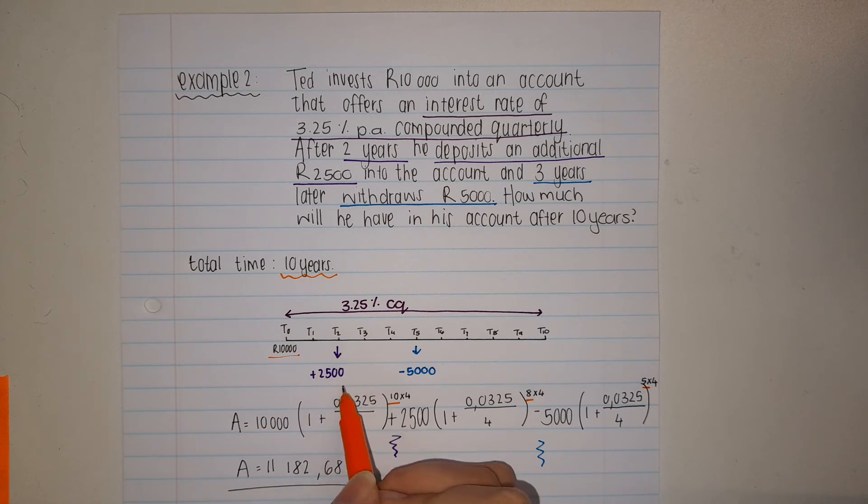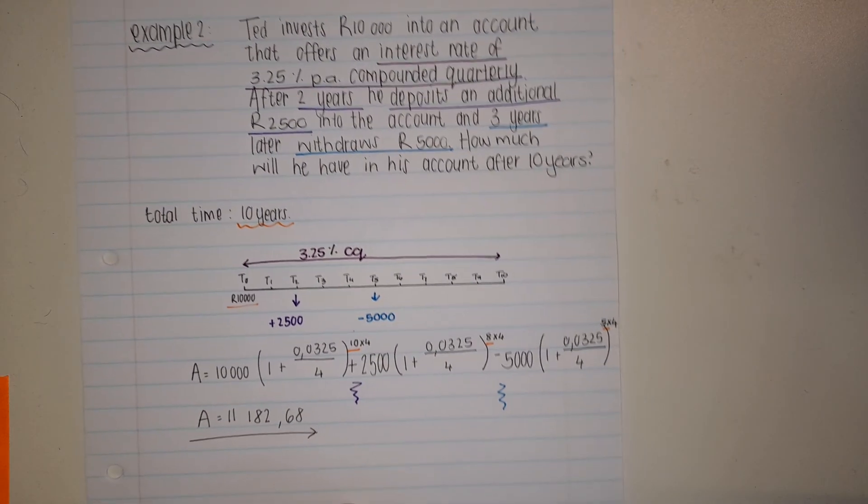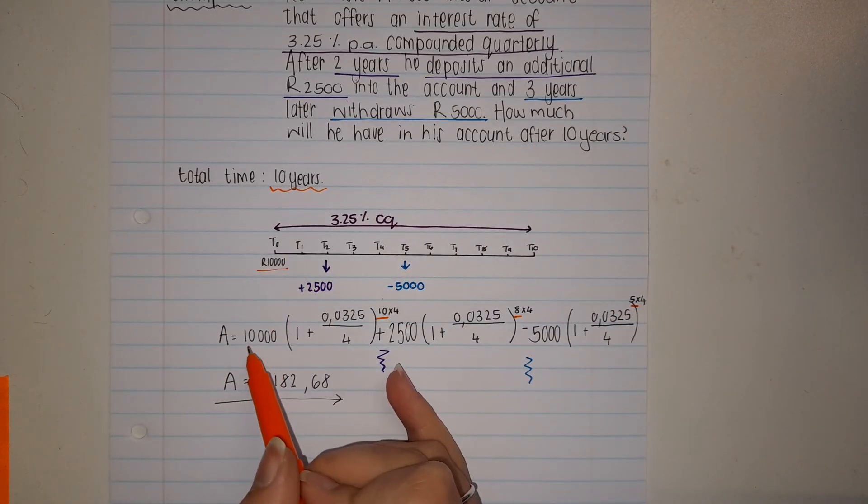After 2 years he added 2500, and then 3 years later, which is year number 5, he withdraws 5000 rand. Now this I need to put into my calculation.